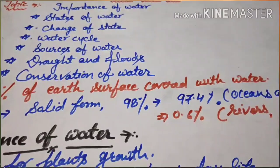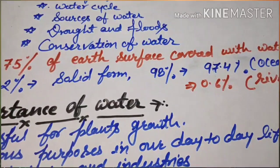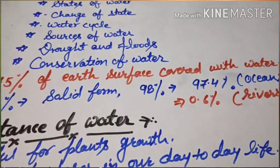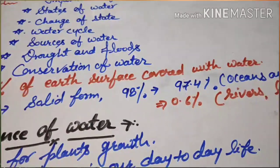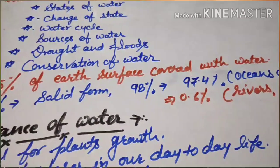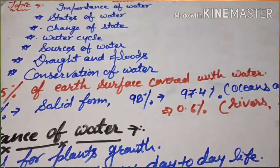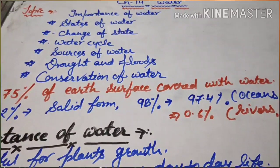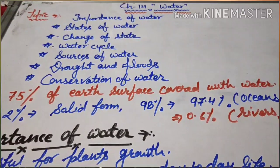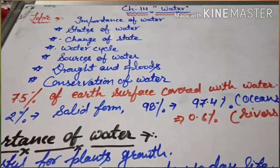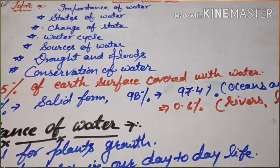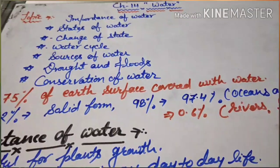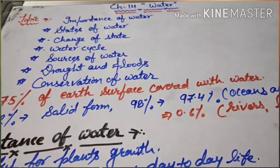The second important reason is that water distribution is not equal everywhere. At some places there are floods, while other places receive no rain at all. Water is not evenly distributed on the earth. The third reason is pollution of water, which spoils the quality of water, making it unusable.